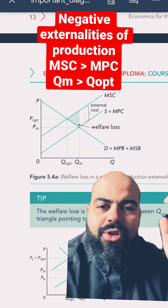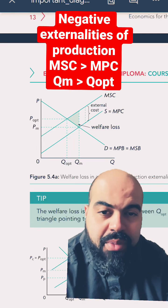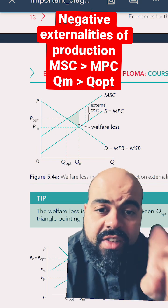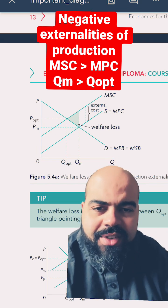Hey, everyone. So today I'm going to talk to you about negative externalities of production. This is when a productive activity imposes an external cost on the rest of society.